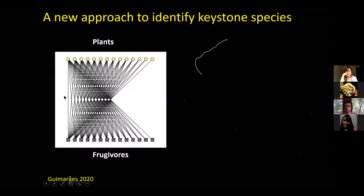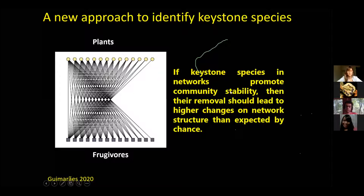For those not familiar with ecological networks: this is a basic representation of how plants interact with frugivores. Every time you see a bird or frugivore eating a fruit, that's a positive interaction scored as one; when the interaction is not present, you score zero. If you remove a highly connected plant from the community, you have a much larger effect than removing a species that interacts with only one frugivore. We hypothesize that keystone species in networks promote community stability, so removing them results in higher changes in network structure than expected by chance.